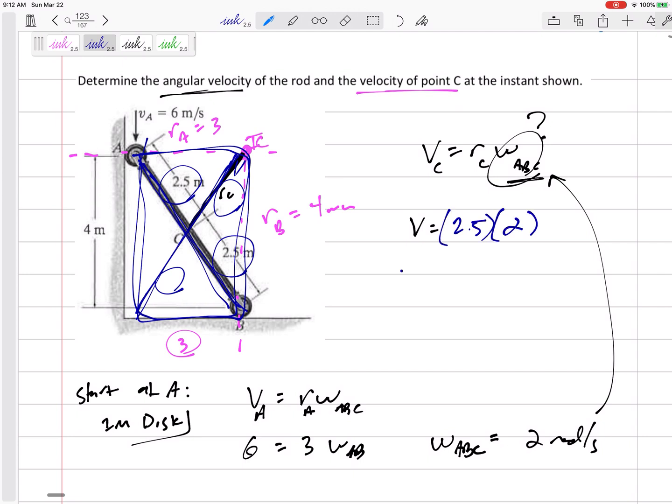The omega is 2. So the velocity of c is 5 meters per second.